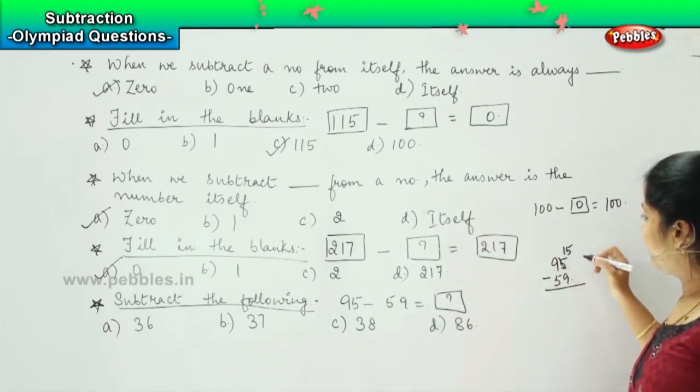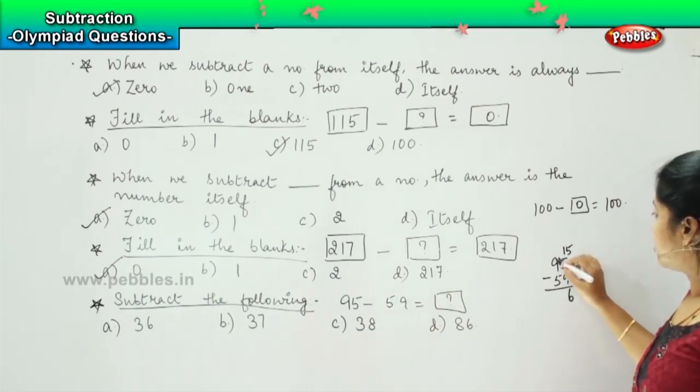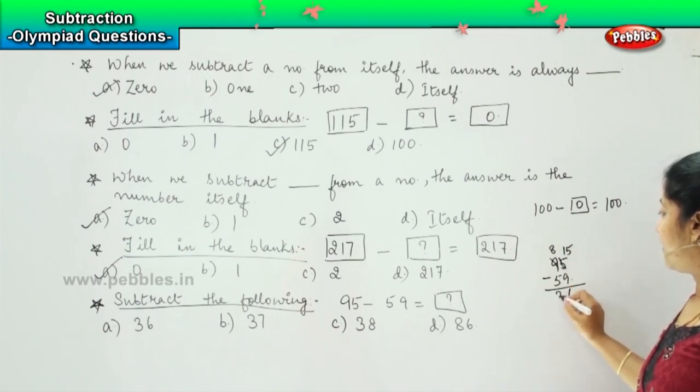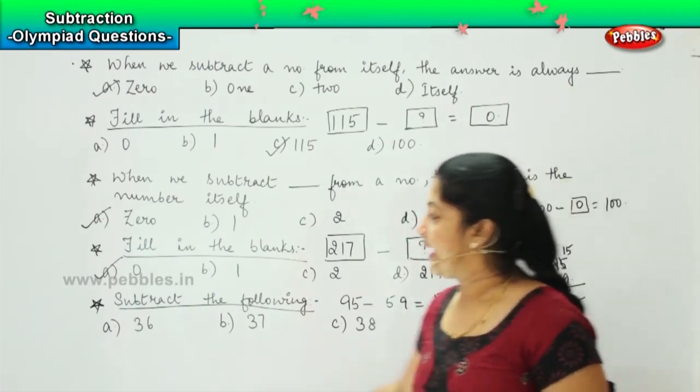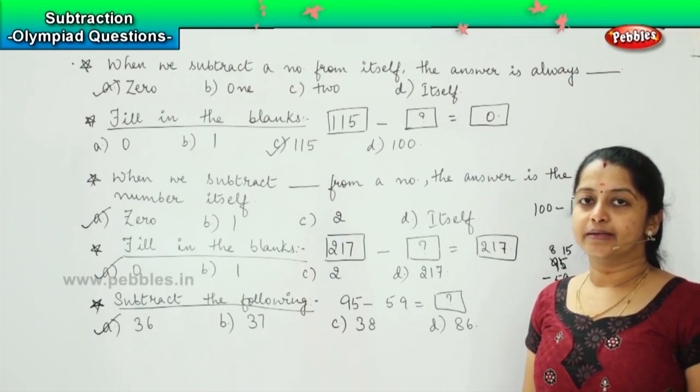So it will become here 15. 15 minus 9 is? Good. 6. So this will be reduced by 1. So 8 minus 5 is 3. So what is your answer here? It is a) 36. Clear? Shall we move ahead?